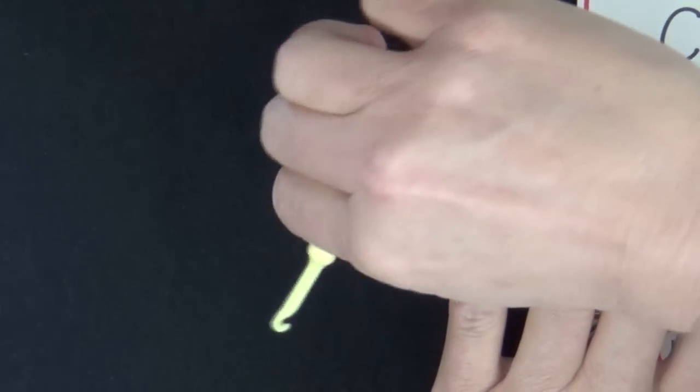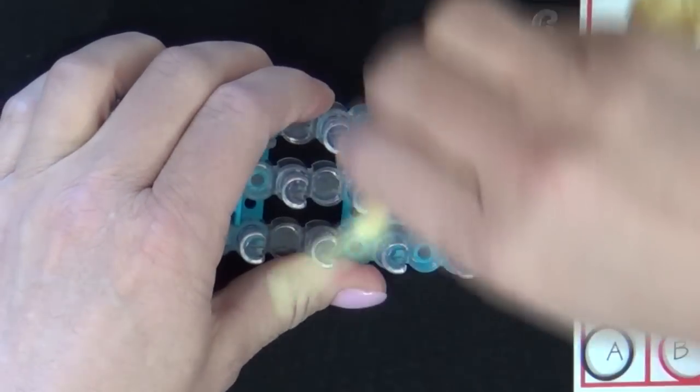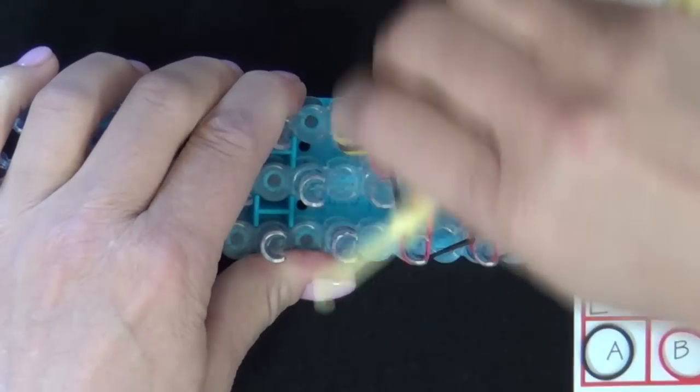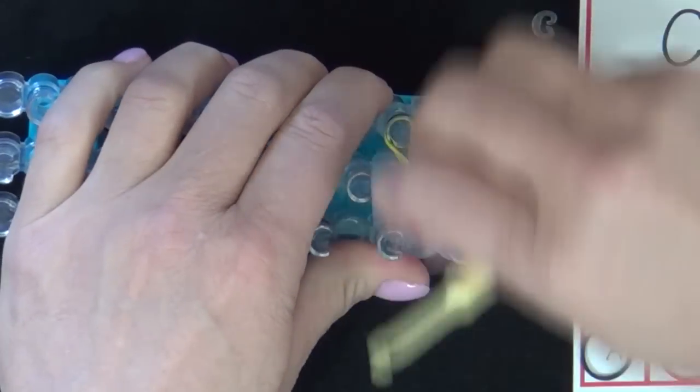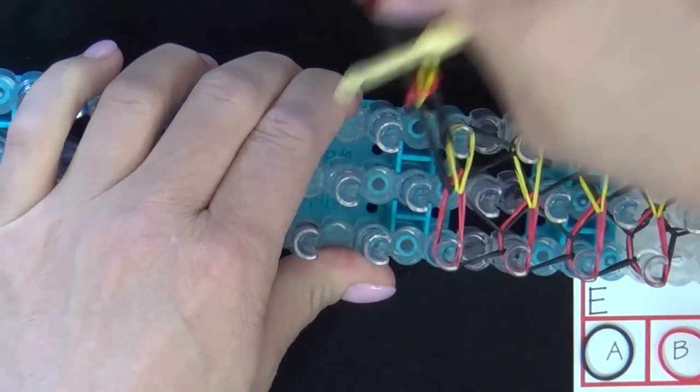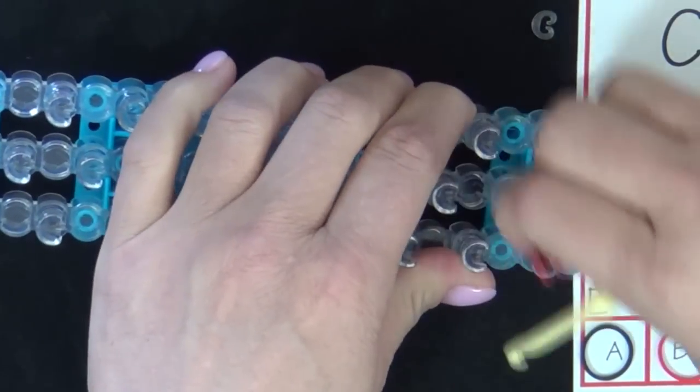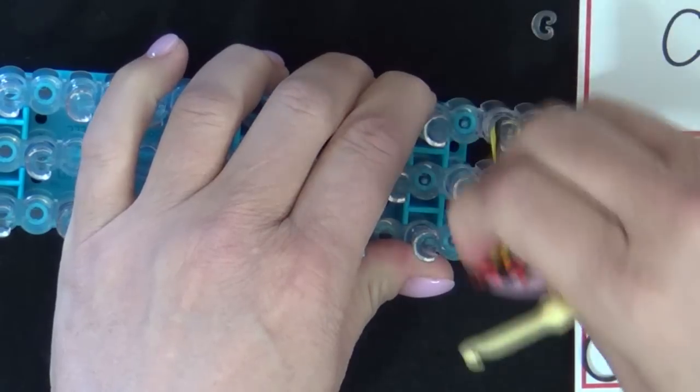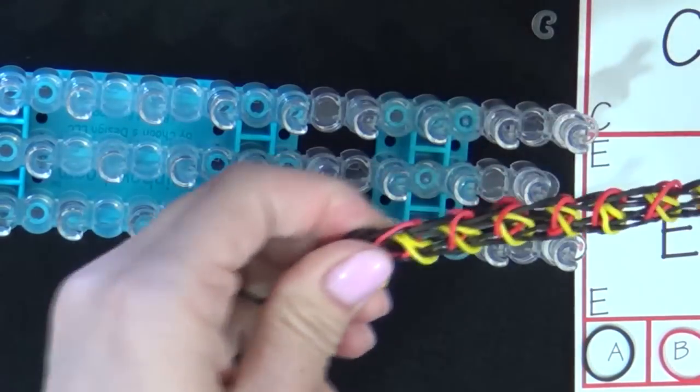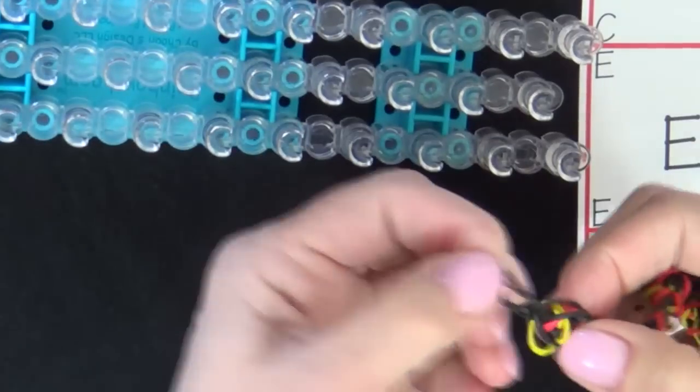Now with your fingers, you'll pull these first bands off the loom, and then you'll continue to pull them off the loom. And you've got your bracelet, you locate that cap band, which is that double loop band.